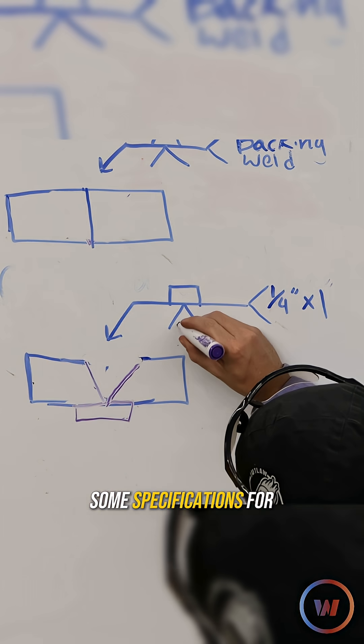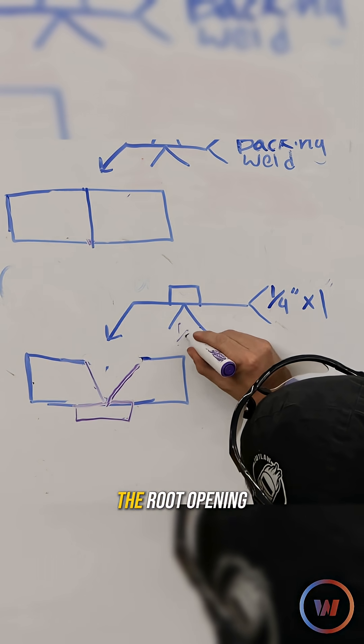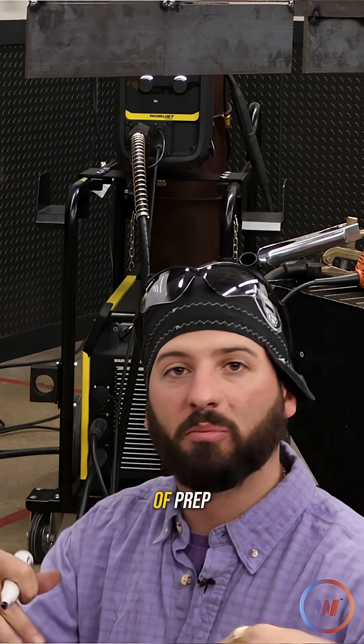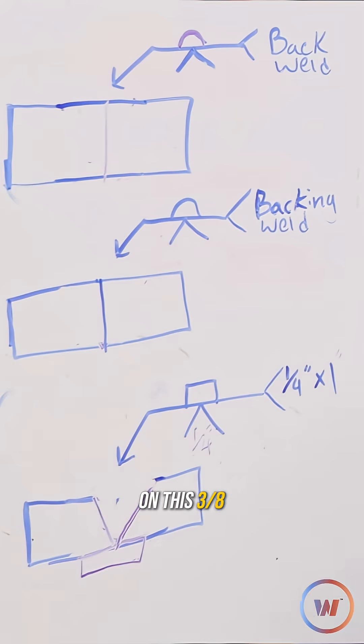You might see some specifications for the groove angle as well as the root opening. In this case we'll have our root opening in here and the depth of prep is going to be all the way on this 3/8ths plate.